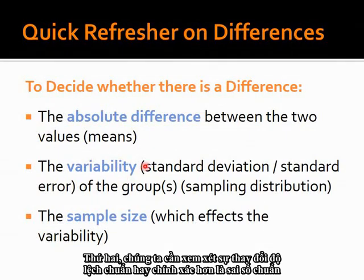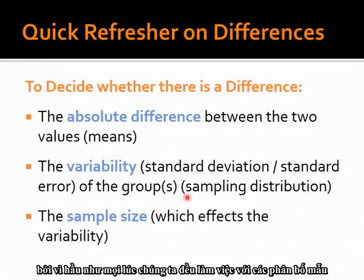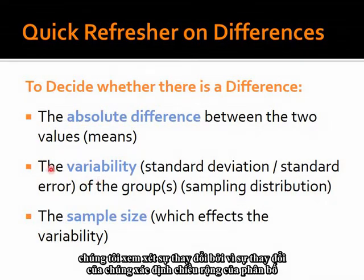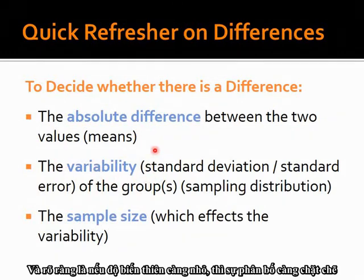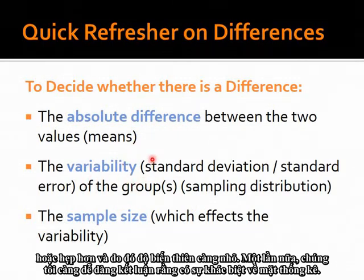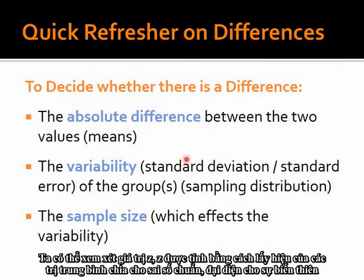Second, we need to look at the variability — the standard deviation, or more accurately the standard error, because virtually all the time we are working with sampling distributions. The variability determines the width, size, and shape of the distribution. The smaller the variability, the tighter the distribution, and the easier it is to conclude there is a statistically significant difference. Think of this as the Z value: Z equals the difference of the means divided by the standard error. The smaller the variability or the larger the difference, the higher Z goes.